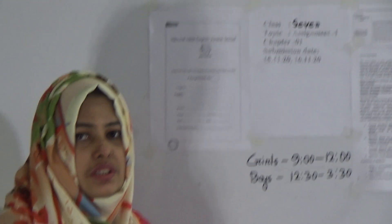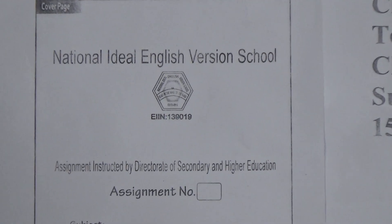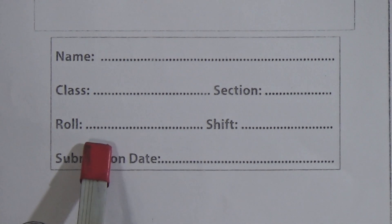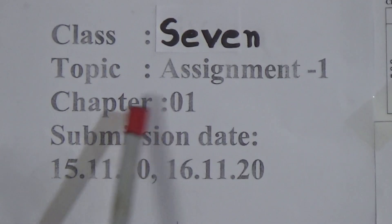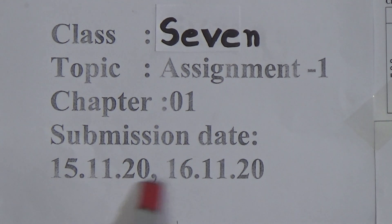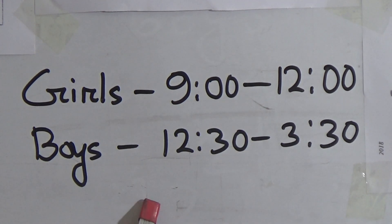Let us start today's class. Before starting, I want to show you the cover page of our assignment. On this cover page you have to write your assignment number, subject name, topic, your name, class name, roll number, shift, section, and submission date. Assignment 1 is based on chapter 1. The submission date is 15/11/20 and 16/11/20. For girls the time is 9 am to 12 pm, and for boys the time is 12:30 to 3:30 pm.